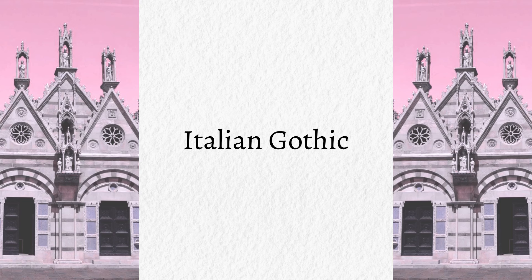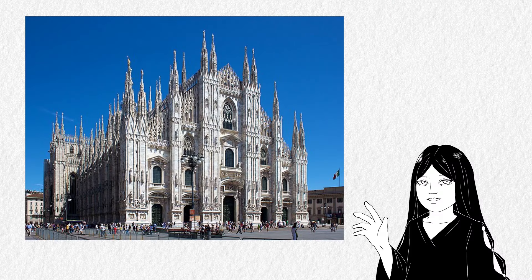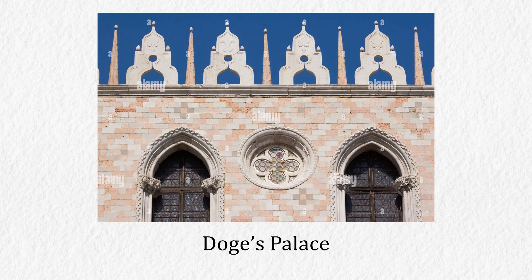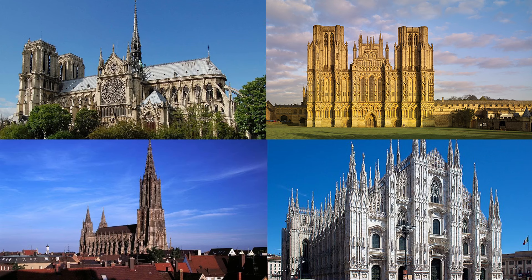Italy also had distinct Gothic styles, even if the Gothic influence was not strong enough to completely replace the Romanesque architecture there. Apart from stones and bricks like other regions, Italians also incorporated marble in their decorations or even in the building itself. For example, they have marble pillars in Siena Cathedral or the pale pink marble facade at the Doge's Palace. These are only a few examples of how each region applied the Gothic style to its architecture differently.